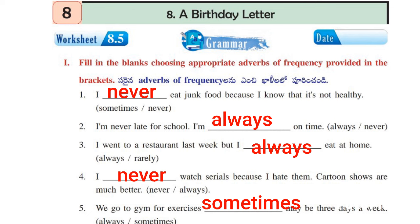Let's move on to worksheet number 8.5. This worksheet is totally about grammar. In the first roman, we have given fill in the blanks and we have to put the correct adverbs. Options are already given for us. We need to choose the correct adverbs and put them in the blank. First one: I never eat junk food because I know that it's not healthy. Second one: I am never late — I hate serials. Cartoon shows are much better. Last one: We go to the gym for exercise sometimes — maybe three days a week.